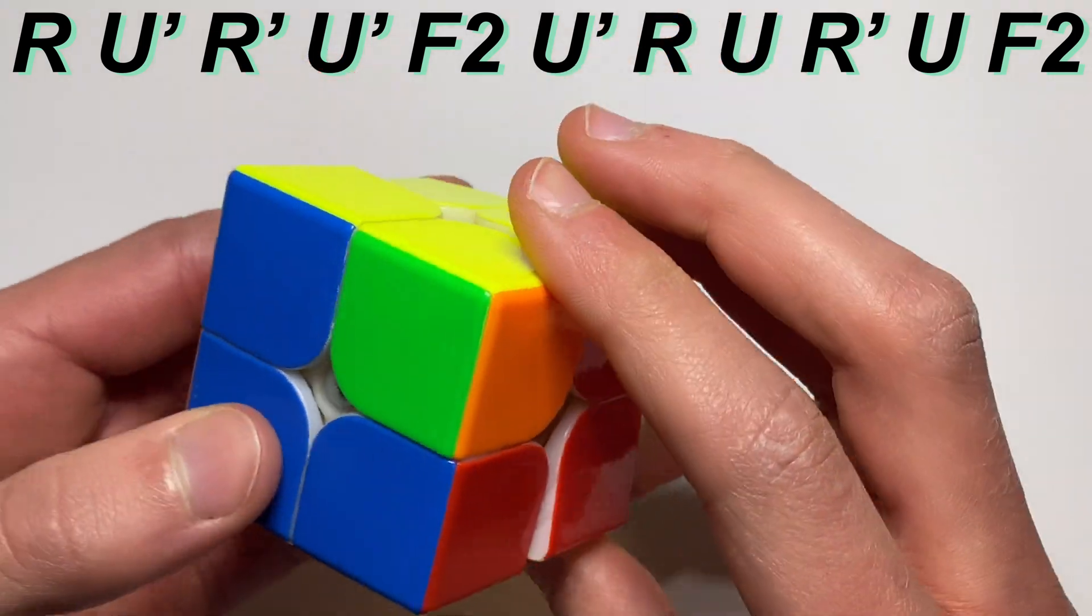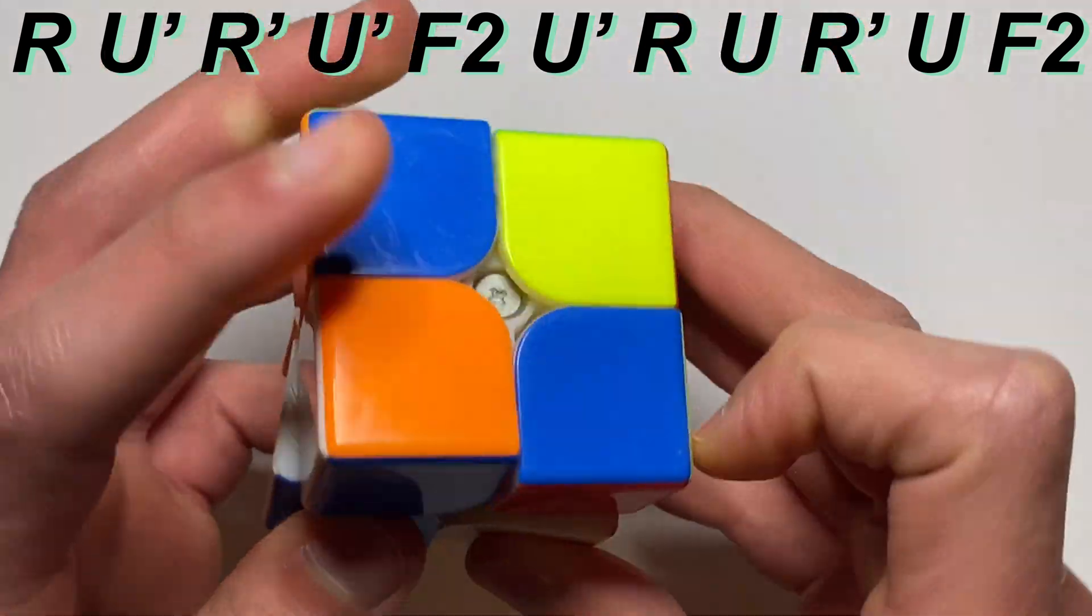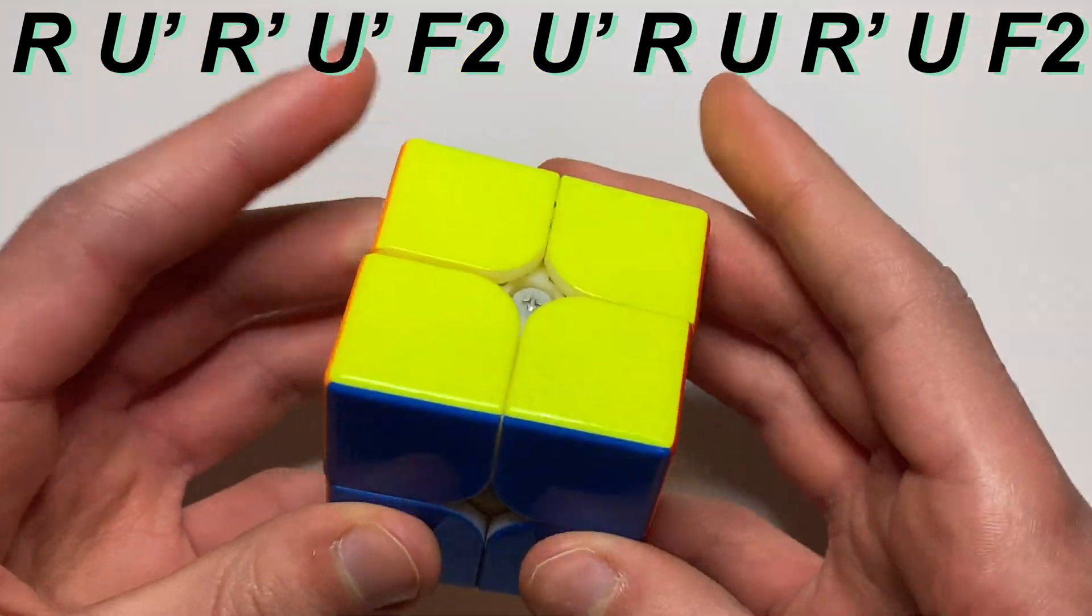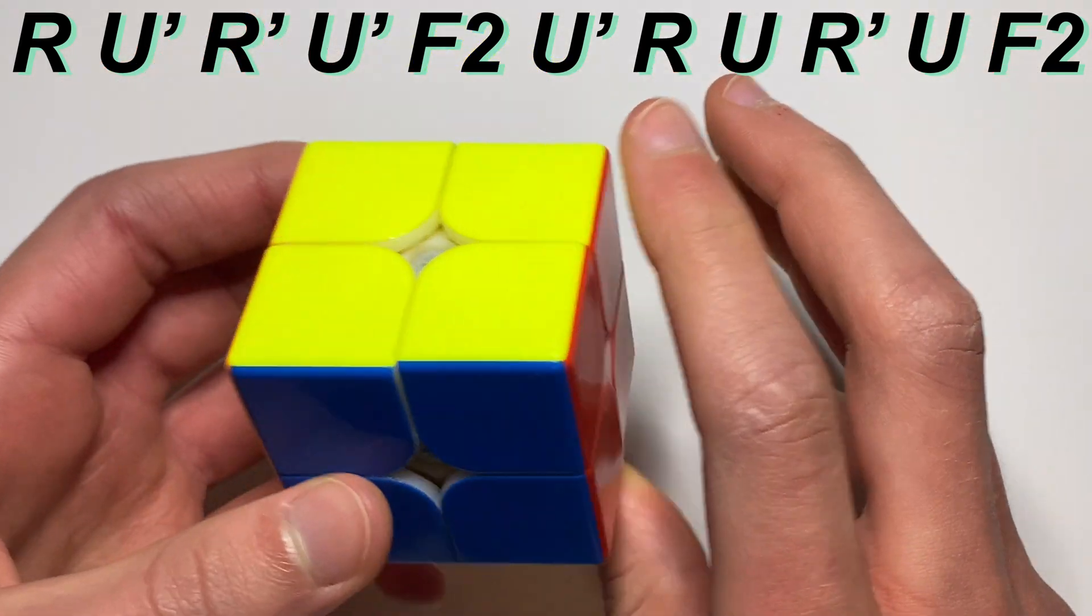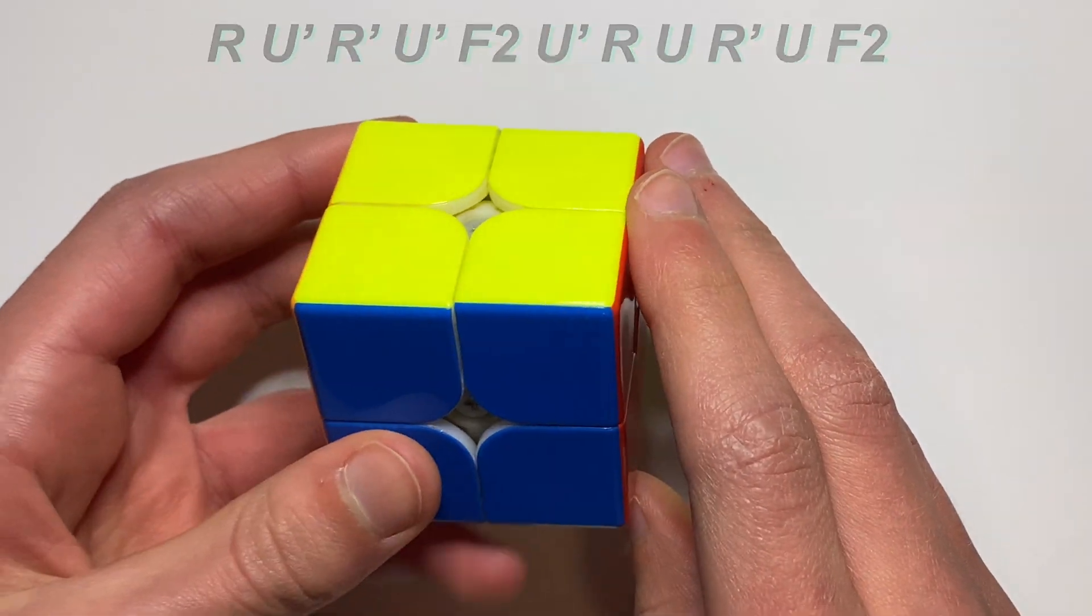And it's a lot quicker than doing the whole Y perm because the Y perm takes very long and has a lot of moves in it. So I'd recommend using that algorithm.